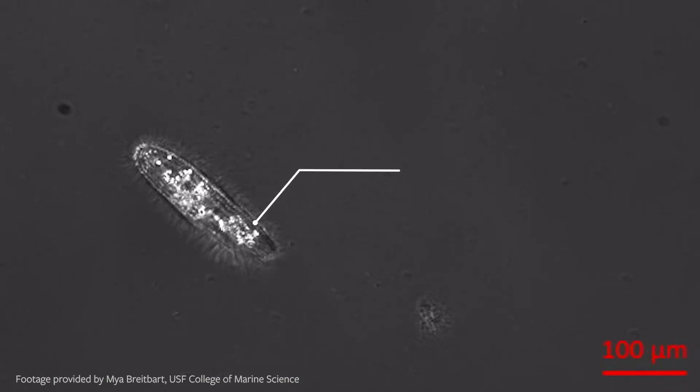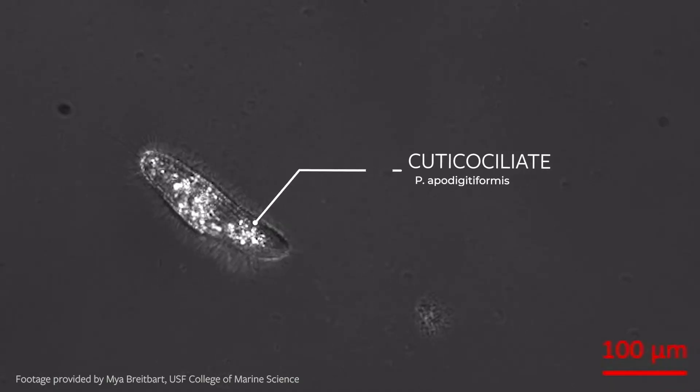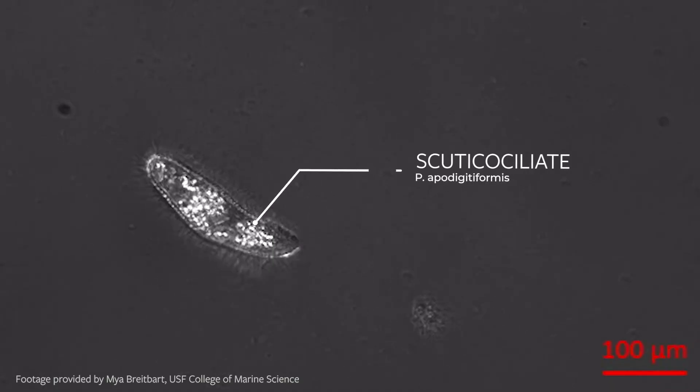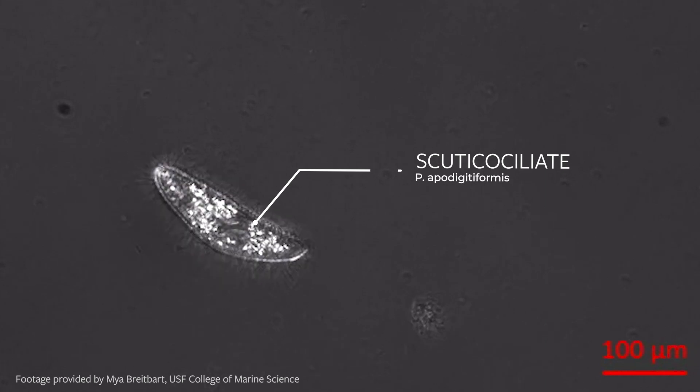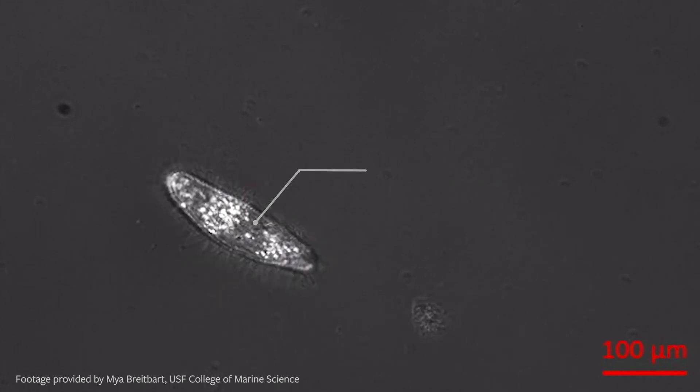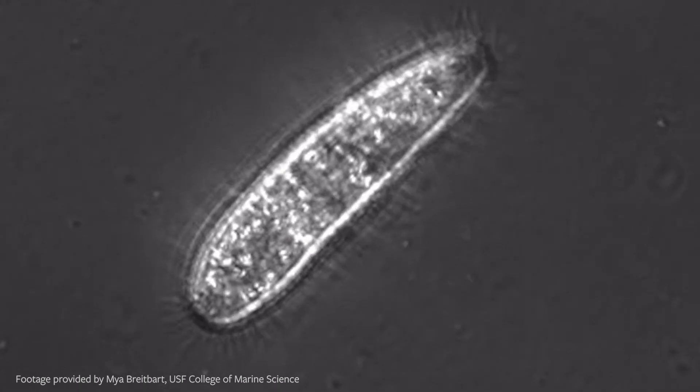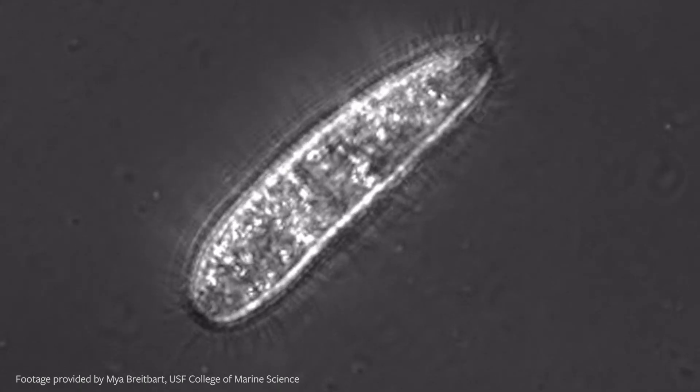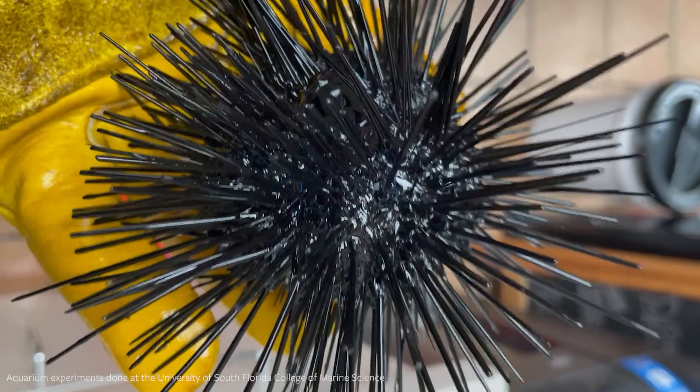Scutico-ciliates belong to a class of unicellular eukaryotic microorganisms — making them similar to things like fungi as opposed to a bacterium — that are known to be pathogenic in fish and other types of invertebrates, including crustaceans.